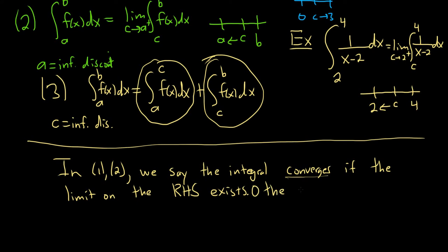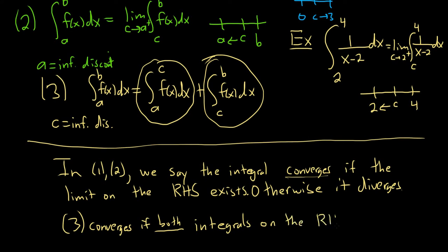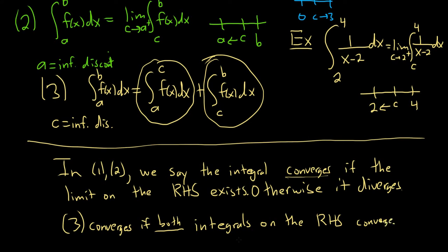And again, I think these are harder than the ones with infinities. In the videos that follow, you'll see some examples. Three converges if both integrals on the right-hand side converge. So they both have to converge. So if one of them diverges, the whole thing diverges. That's very useful in mathematical proofs because if you show divergence of one, the whole thing diverges. Game over, and you're done. Otherwise, it diverges.